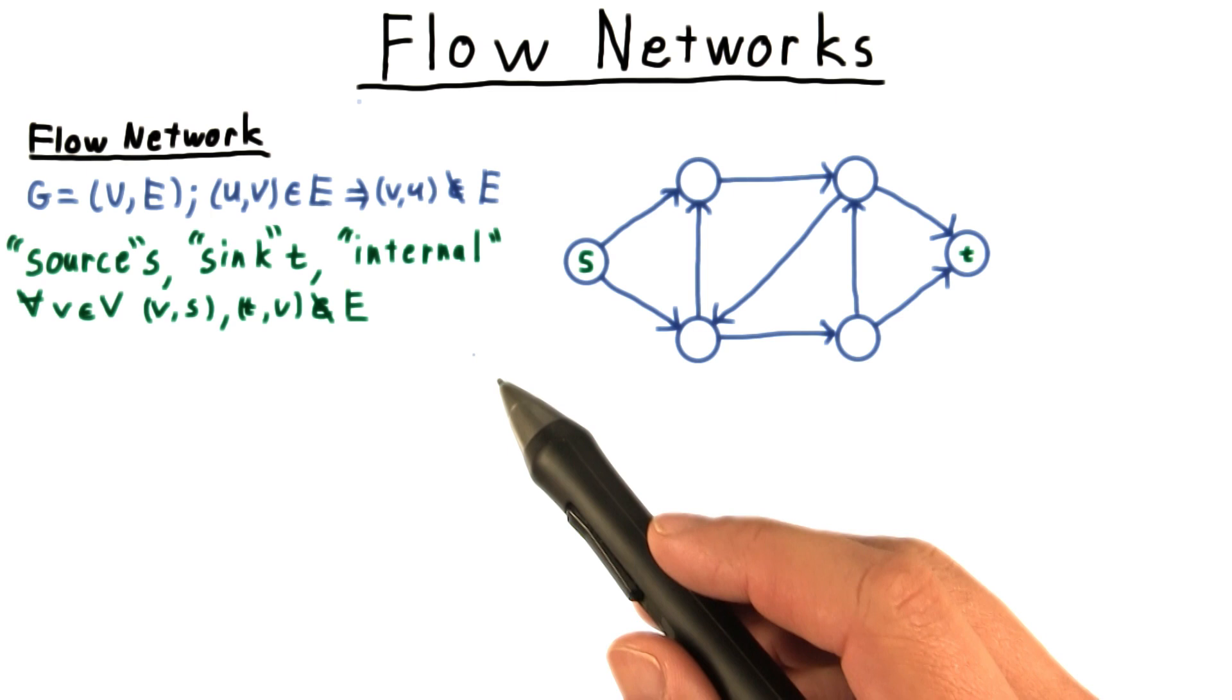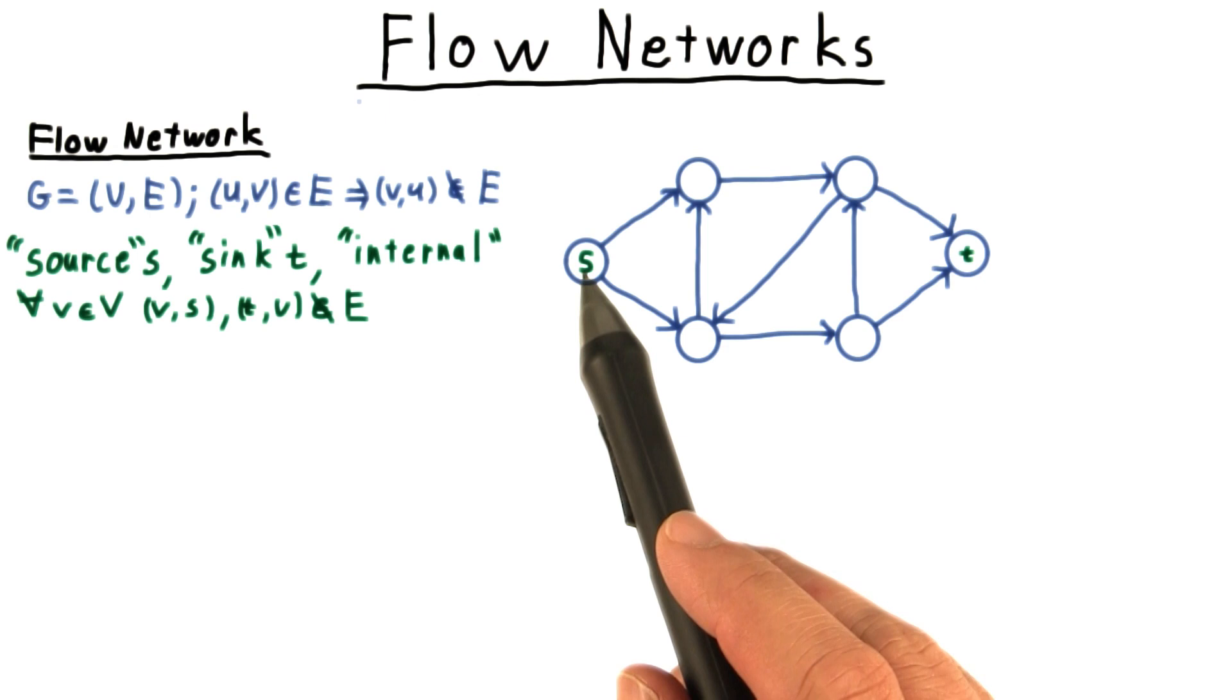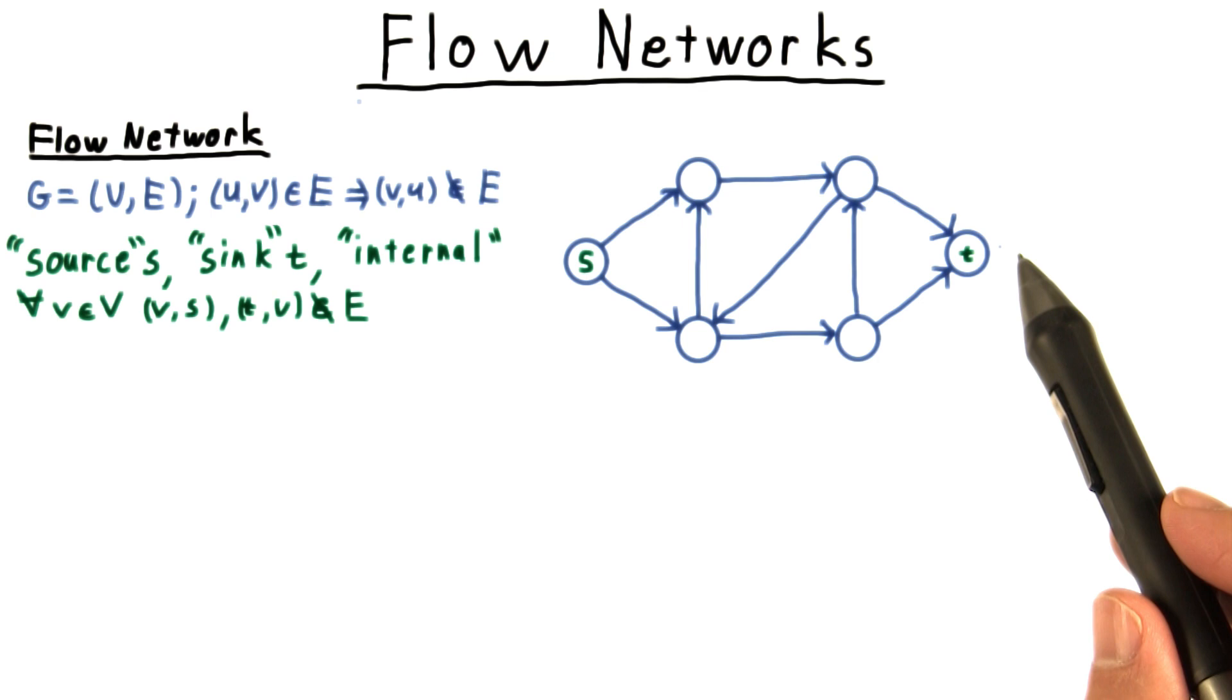We'll distinguish two special vertices in the graph. A source, typically labeled S. This is where whatever is flowing through the network starts from. And a sink, typically labeled T. This is where the flow ends up. We call all other vertices internal.